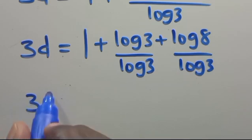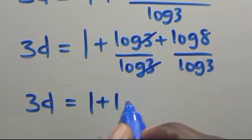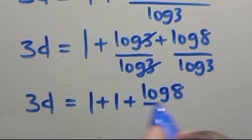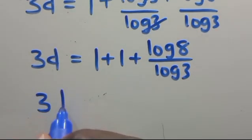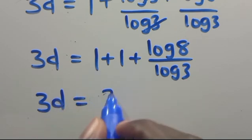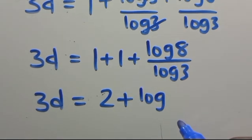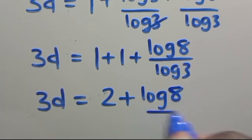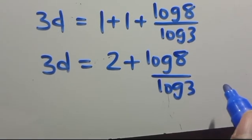Dividing through by log 3, we cancel out the log 3 terms and we have 3D equals 1 plus 1 plus log 8 over log 3, which simplifies to 3D equals 2 plus log 8 over log 3.